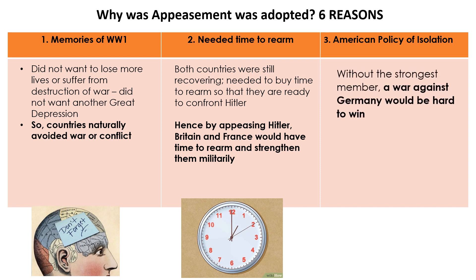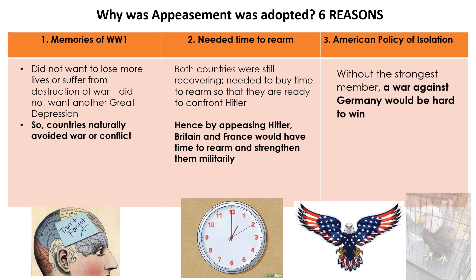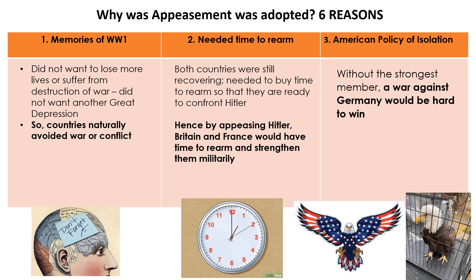The third reason is of course that America was not in the League of Nations. So if the strongest member country is not in the League of Nations, then it was very hard for Britain and France to handle Germany alone. America was practicing isolationism, and it did affect what happened in Europe and how Hitler definitely got bolder.